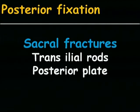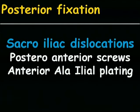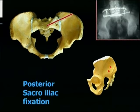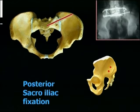Posterior fixation for sacral fractures includes transiliac rods, posterior plates, posterior screws, and anterior plating. For the percutaneous screw technique, the screw is passed from posterior to anterior into the S1 body. Under image intensifier, you match the greater sciatic notch; the entry point is two centimetres above, and with anterior angulation under image intensifier guidance, the iliosacral screw is passed anteriorly.